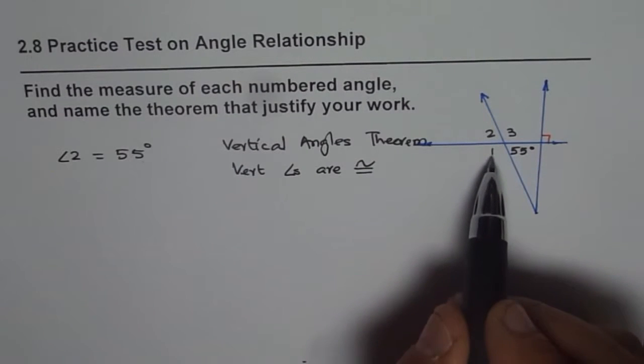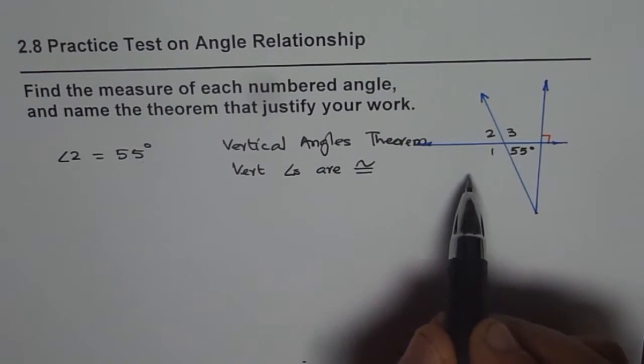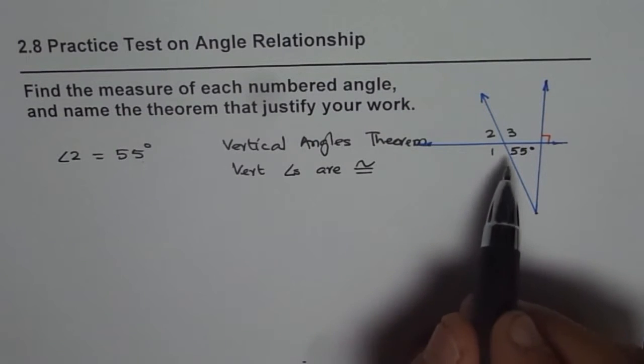Now, angle 1 and 3 are equal. They are vertical angles also. Either one of them can be found using linear pair or supplementary angles.